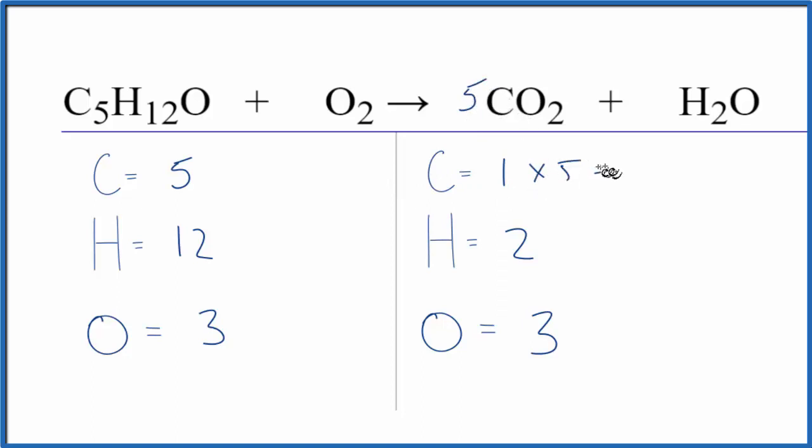And then for the oxygens, we have two times five is ten, plus the one here that equals eleven. So you have some kind of strange numbers here. Let's just balance the hydrogens here. We need to have twelve.